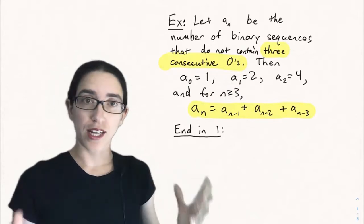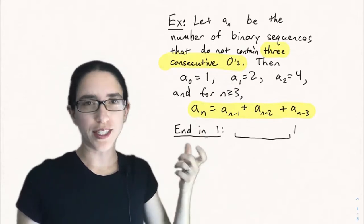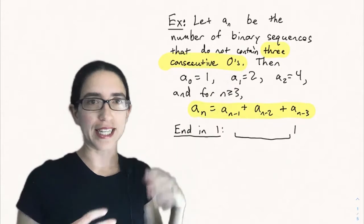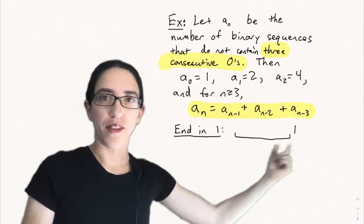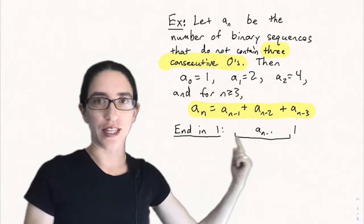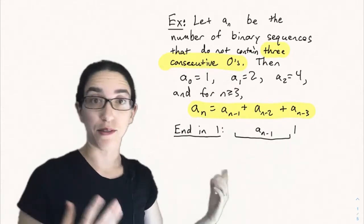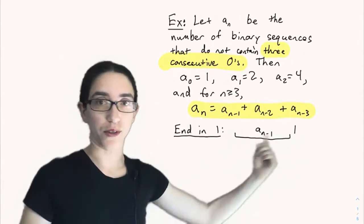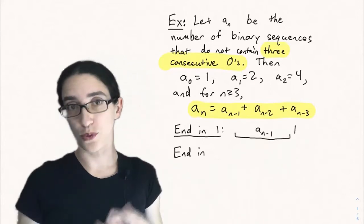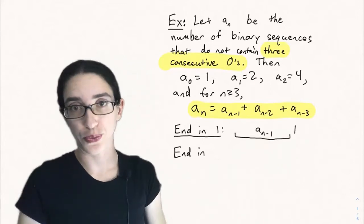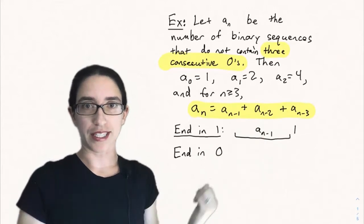First, consider sequences that end in a 1. If it ends in a 1, then the previous n-1 entries can form any sequence of length n-1 that doesn't have three consecutive zeros, since the 1 won't ruin that property. So there are a_{n-1} possibilities in that case.